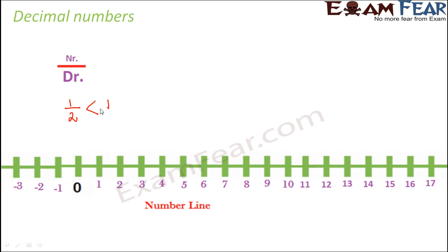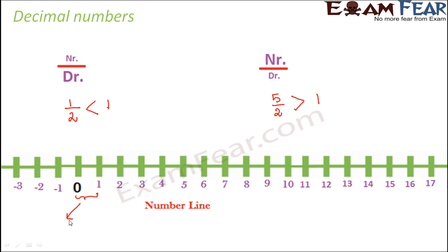The entire value of 1 by 2 would be less than 1. In fractions, you have two types: a proper fraction where the numerator is smaller, and an improper fraction where the denominator is smaller. For numerator over denominator where the numerator is bigger, take 5 by 2 — its overall value would be greater than 1. All positive proper fractions are located between 0 and 1 on the number line, while all improper fractions are located somewhere beyond 1.